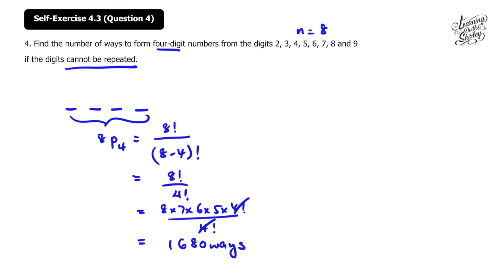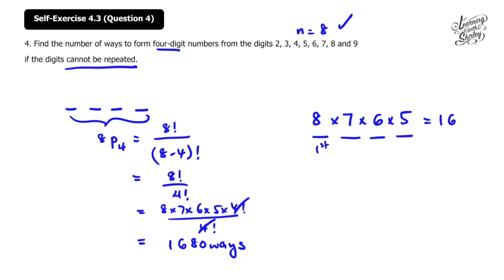Alternatively, we can draw 4 lines representing the 4 digit positions. For the first digit, there are 8 choices: 2, 3, 4, 5, 6, 7, 8, and 9. For the second digit, there are 7 ways because one digit has already been used. For the third place, only 6 ways remain since two digits are already taken. The last position has 5 ways. Multiplying all together: 8 times 7 times 6 times 5 also gives 1,680 ways.